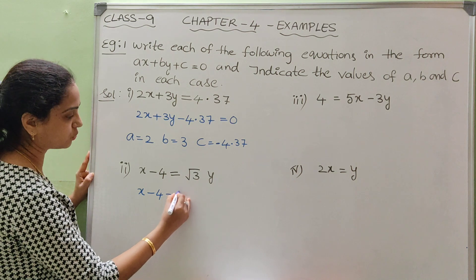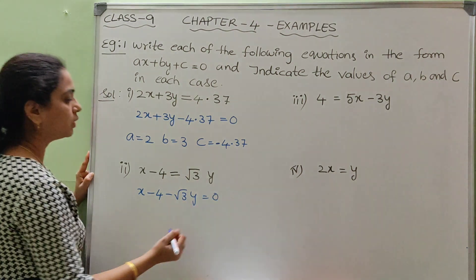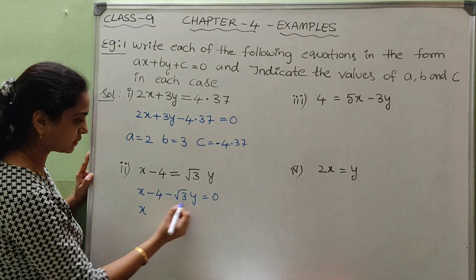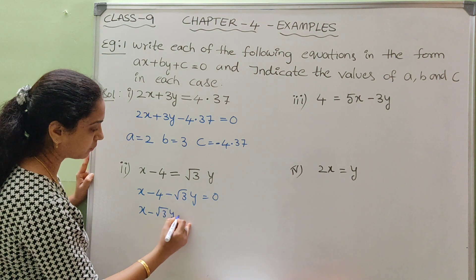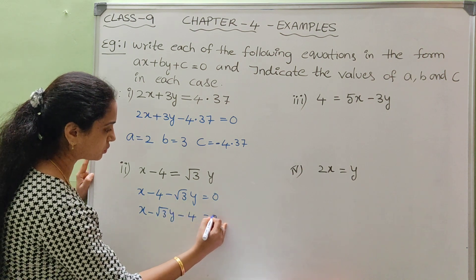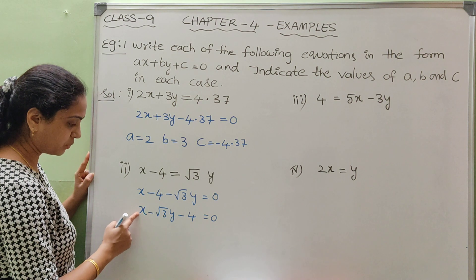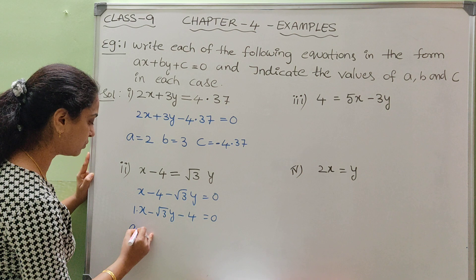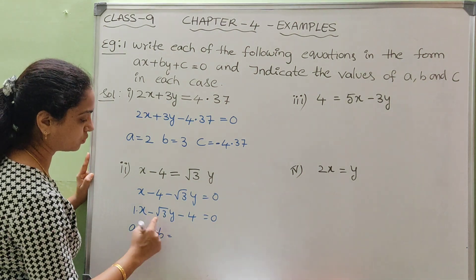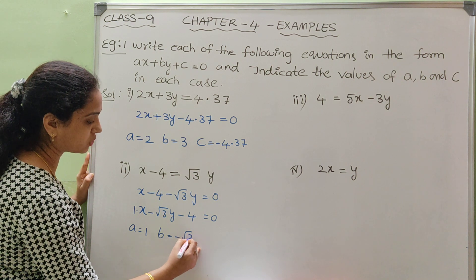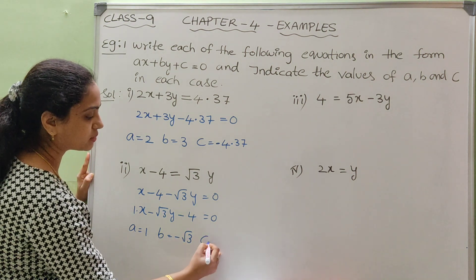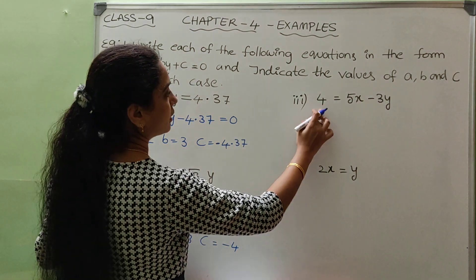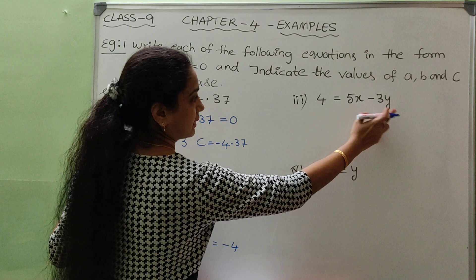Second question: x minus root 3y equals to 0. We have to write it in the form of ax plus by plus c equals to 0. So x minus root 3y minus 4 equals to 0. Now the a value — nothing is written before x, meaning this is 1x, so a equals to 1. B equals to minus root 3 — sign is also important. C equals to minus 4.